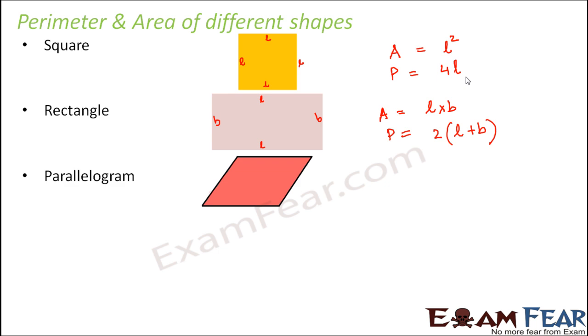Parallelogram. Parallelogram is that quadrilateral where the opposite sides are parallel. In case of a parallelogram, its area is base into height. This is the base and this is the height. So base into height would be the area. And what about the perimeter? Perimeter would be sum of four sides.